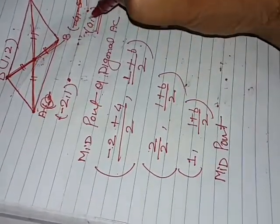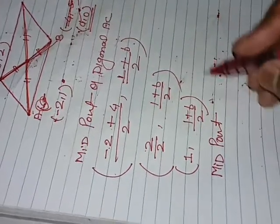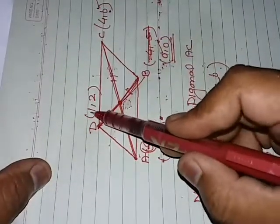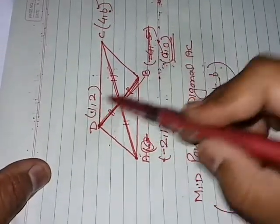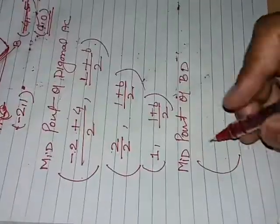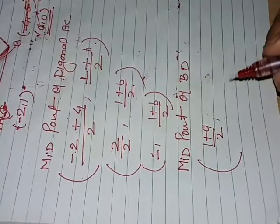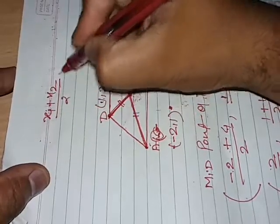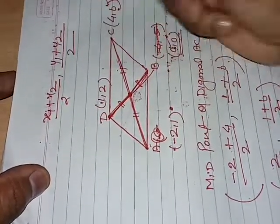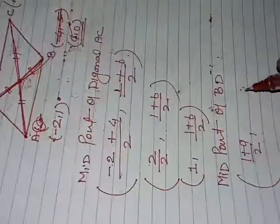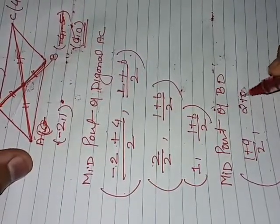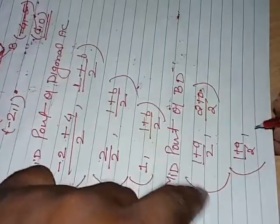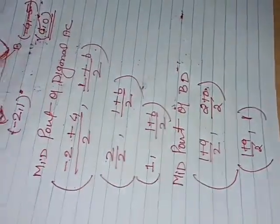Now find the midpoint of diagonal BD. The coordinates of B are (a,0) and D are (1,2). Using the midpoint formula: x = (1 + a)/2, and y = (2 + 0)/2 = 1. So the midpoint of BD is ((1+a)/2, 1).